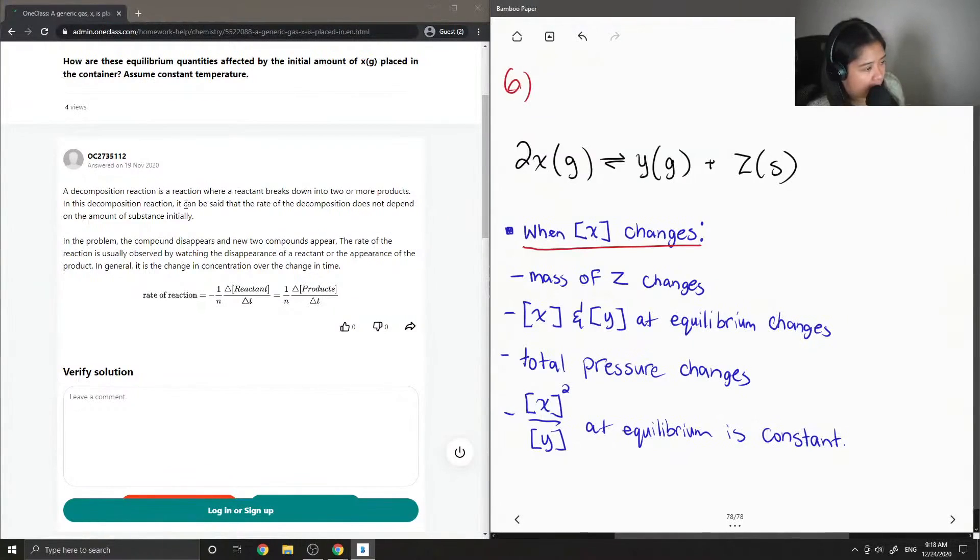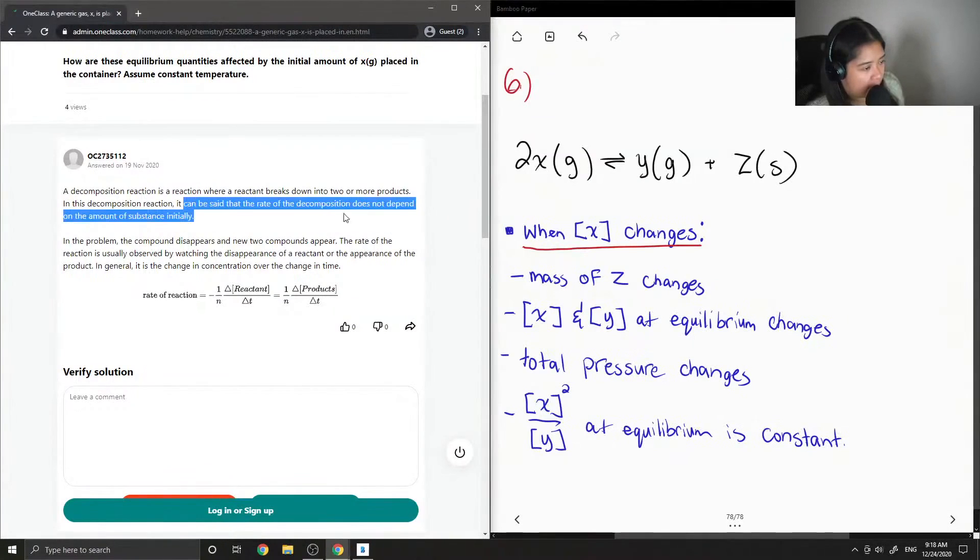Okay, so to continue, it can be said the rate of decomposition does not depend on the amount of substance initially. In the problem, the compound disappears and two new compounds appear. The rate of the reaction is usually observed by watching the disappearance of a reactant or the appearance of product. In general, it is the change in concentration over the change in time.